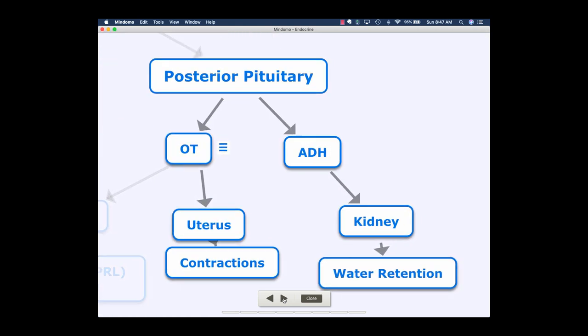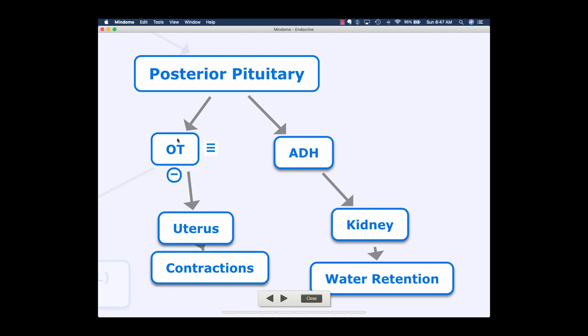That's it from the anterior pituitary, and now you can see that connection between the two — oxytocin is also acting on the breast for milk ejection. On the anterior pituitary side, the hypothalamus regulates the anterior pituitary hormones by secreting hormones onto it — it bosses the anterior pituitary around, and then the anterior pituitary makes its own hormones to secrete. The posterior pituitary doesn't do that. Instead, the hypothalamus makes all of these hormones and sends them down to the posterior pituitary to store and then release. So oxytocin and antidiuretic hormone are not made by the posterior pituitary — they're simply held there.